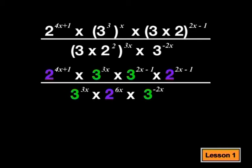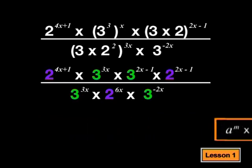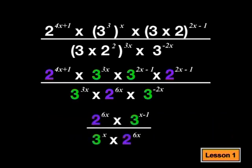It will be easier if you simplify the numerator and the denominator before you go any further. Alright. If you multiply like bases, you add the powers. And I end up with 2 to the power 6x times 3 to the power x minus 1 at the top. At the bottom, we get 3 to the power x times 2 to the power 6x.